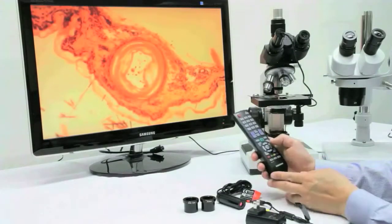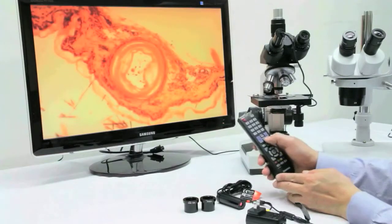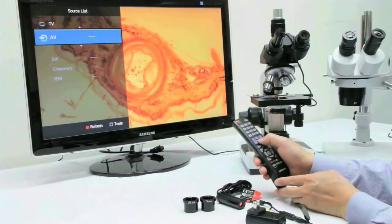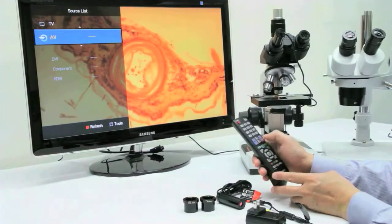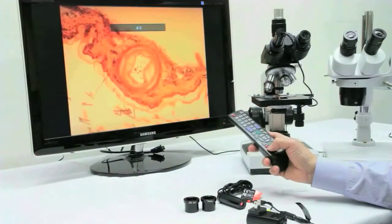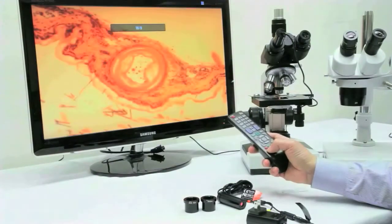After connecting, we make sure we are on the correct input. Generally this should be under AV mode. Depending on your television, it could also be component mode. You can also select a ratio depending on your preference and your TV's options.